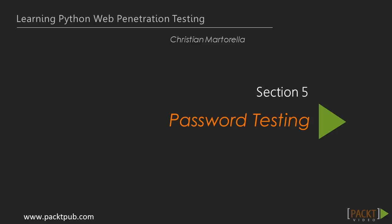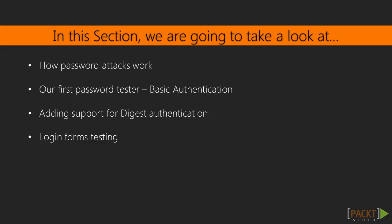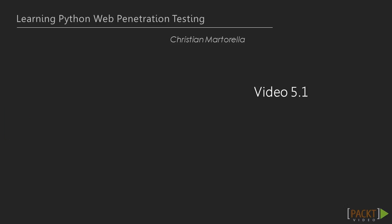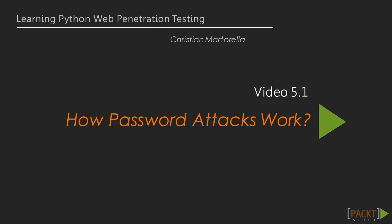Welcome to section 5: password testing. In the previous section we learned how to write a basic web application brute forcer to help with resource discovery. In this section we're going to learn different types of authentication methods that a web application can use, and we're going to develop our own web application password cracking tool with Python. The different methods we'll cover are basic authentication, digest authentication, and form-based authentication.